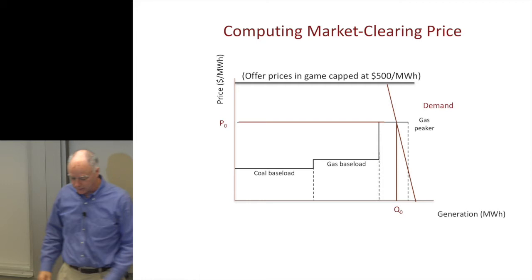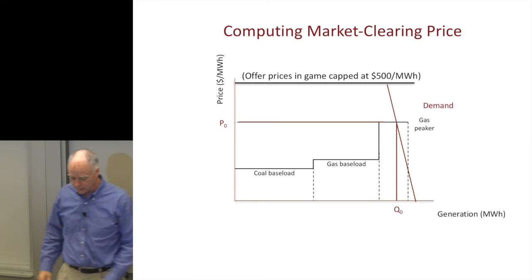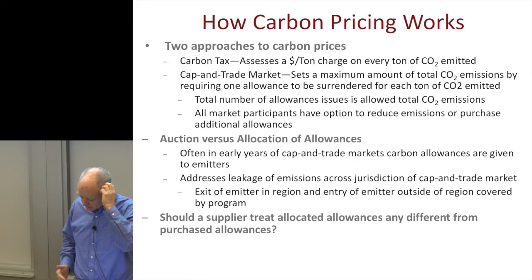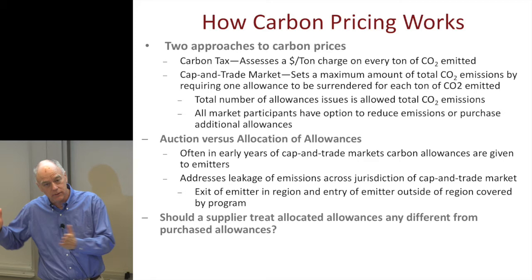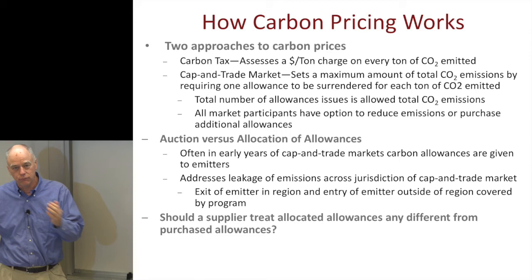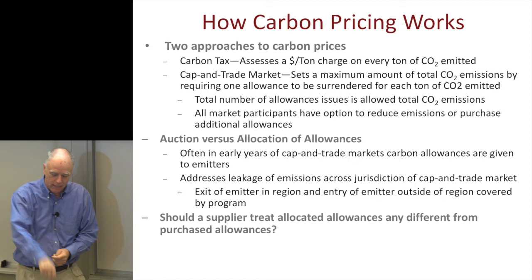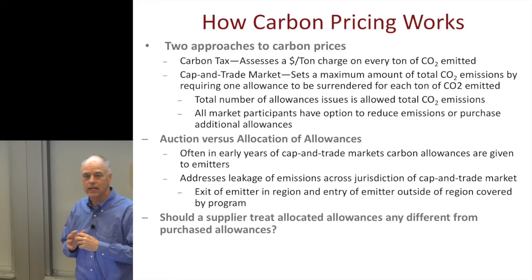Now let's think about carbon pricing and how it works. There are two approaches. One is a carbon tax — and since we're in academia, we can call it a tax, because that's what it is. The other is cap-and-trade, which sets a maximum quantity of emissions by allocating a certain number of allowances, where every unit of emissions needs an allowance to offset it. With the carbon tax, emitters simply report their emissions and pay a tax based on the amount produced.